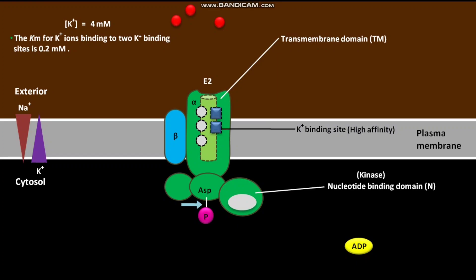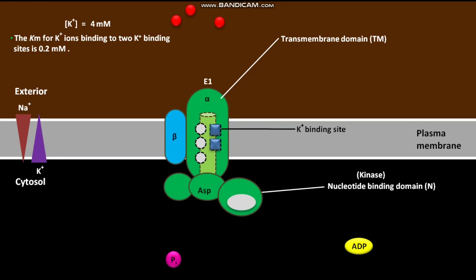The phosphorylated aspartate in the phosphorylation domain then undergoes dephosphorylation, releasing inorganic phosphate (Pi) into the cytosol. This dephosphorylation causes a conformational change from E2 back to E1. In the E1 conformation, the two K+ binding sites with their bound K+ ions and the freed Na+ binding sites are exposed to the cytosolic face, and the two bound K+ ions are released into the cytosol. The pump is now ready to transport three more Na+ ions outward and two more K+ ions inward.